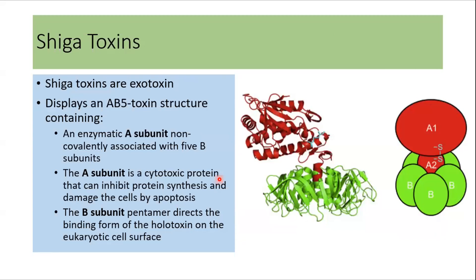Shiga toxin is an exotoxin with an AB5 toxin structure. There are five pentamers of the B subunit covalently associated with the A subunit. The A subunit is a cytotoxic protein that leads to inhibition of protein synthesis and ultimately causes apoptosis of the cell.